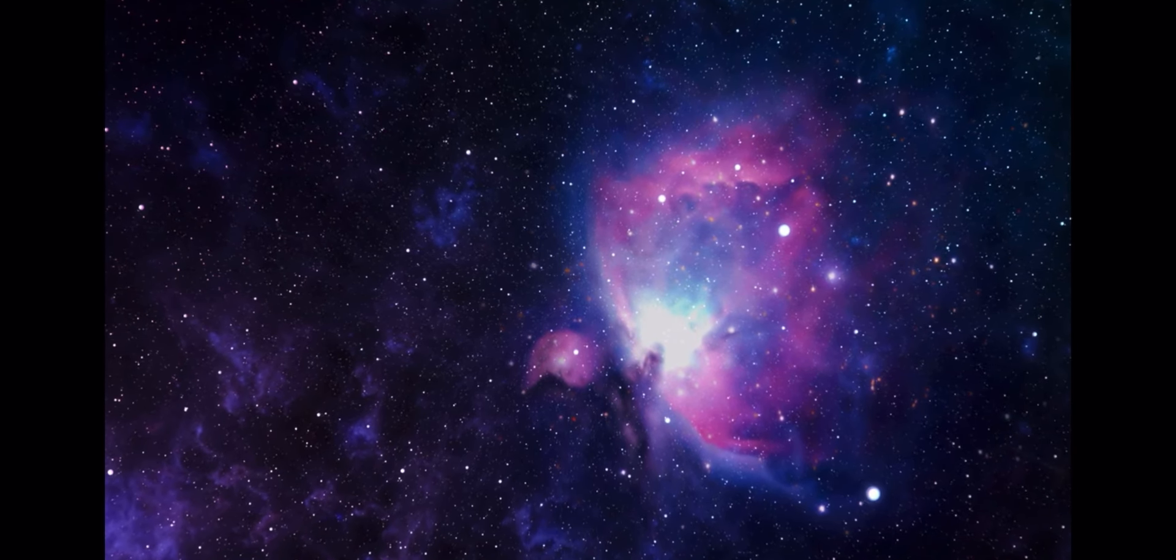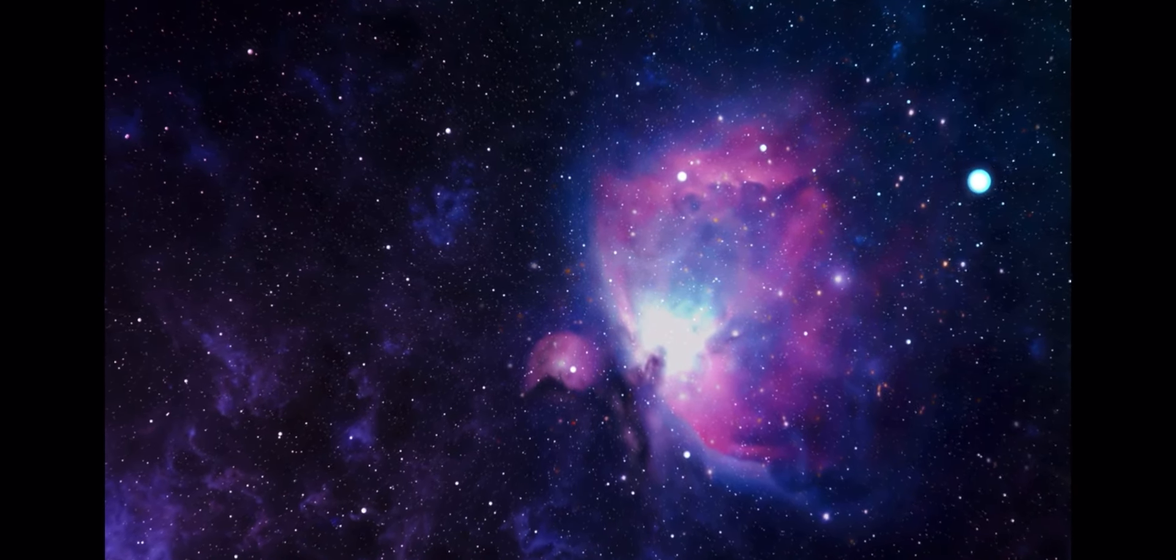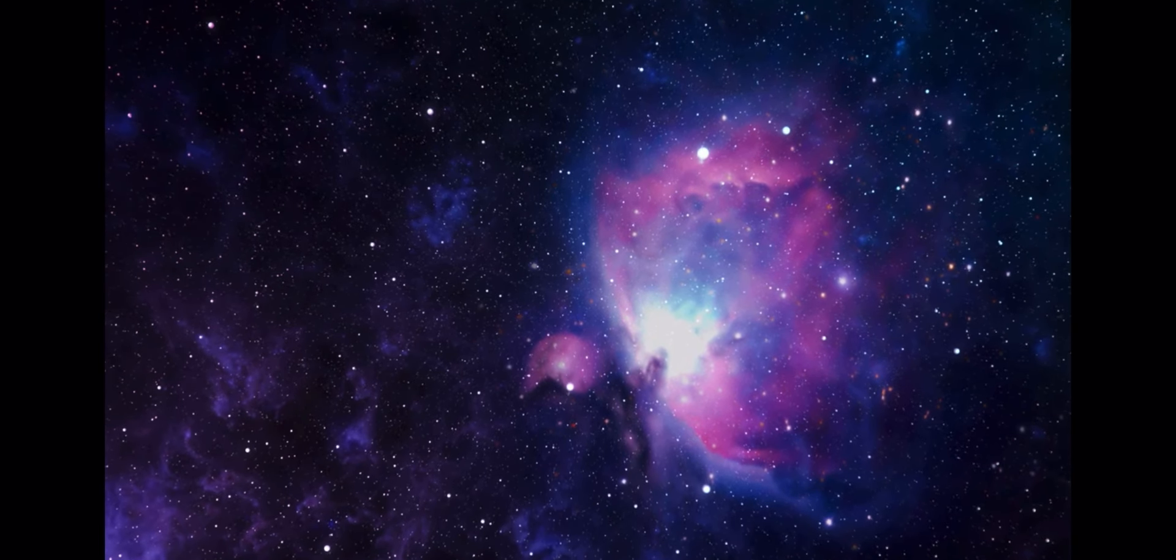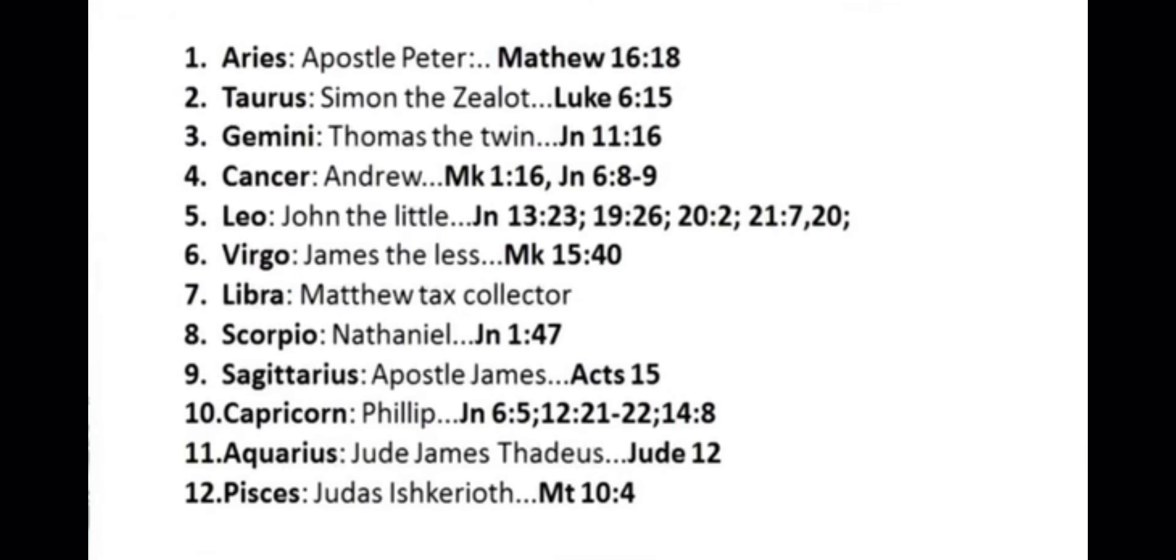Going further, there's 12 Zodiac signs. Notice how Jesus chose 12 disciples. Jesus chose the 12 disciples by the Zodiac and the stars. Each disciple represents and is a part of a Zodiac house.